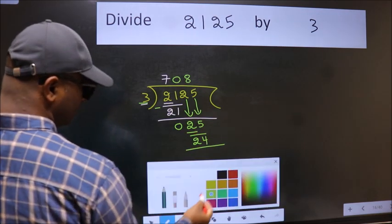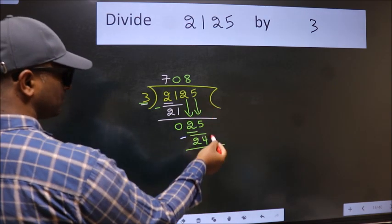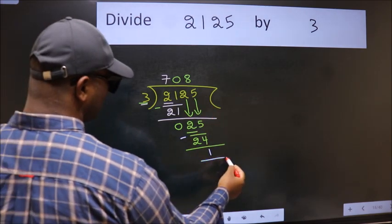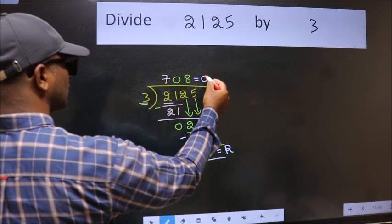Now we subtract. We get 1. No more numbers to bring down, so we stop here. This is our remainder, and this is our quotient.